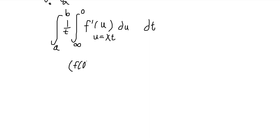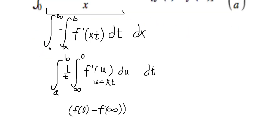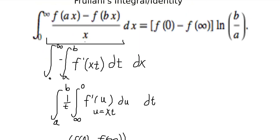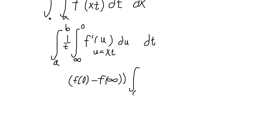So f of 0 minus f of infinity. Assuming, of course, these two expressions are convergent, and this original integral is convergent. And f has to be continuous, differentiable, all that stuff. Now I get the integral from a to b of 1 over t dt. Which we all know is just a logarithmic integral.